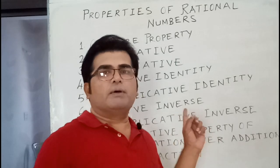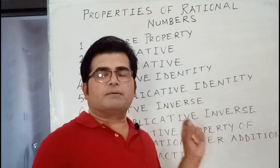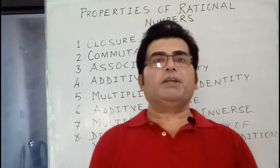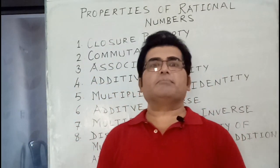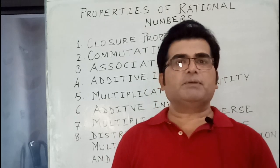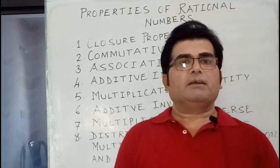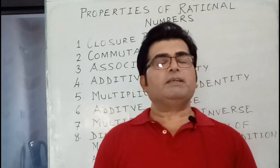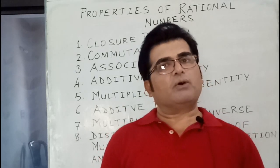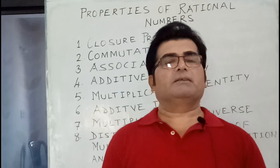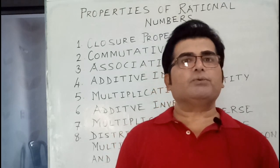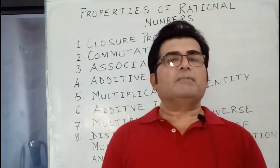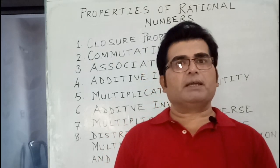First I explain the closure property. We have to test for addition, subtraction, multiplication, and division. In addition, the sum of any two rational numbers is always a rational number. In subtraction, the difference of any two rational numbers is always a rational number. In multiplication, the product of any two rational numbers is always a rational number.